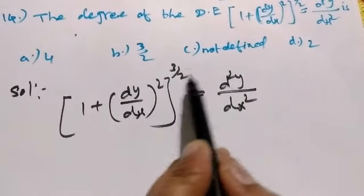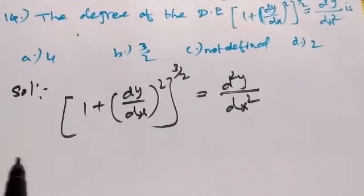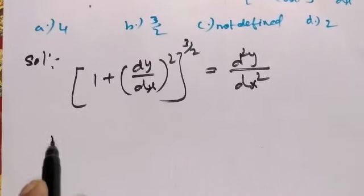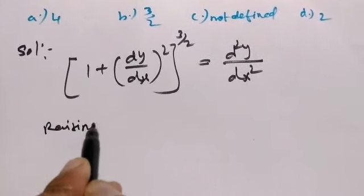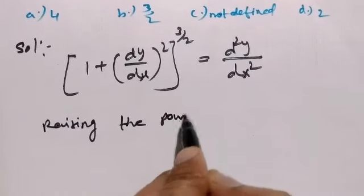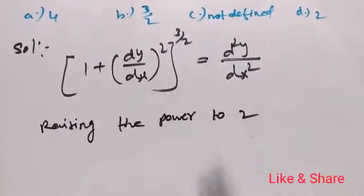The differential equation: 1 plus dy/dx. The 2 will cancel and we raise the power to 2.